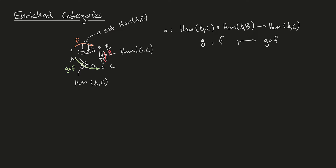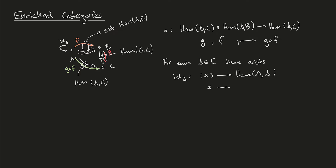In the case of normal categories we also have some further requirements. We require that there be a special arrow, namely the identity on each object. We can formulate this in terms of set maps as follows: for each object a we require there to be a map called the identity on a that goes from the singleton set to hom(a,a). This map just sends the singleton set to the arrow that's the identity on a.